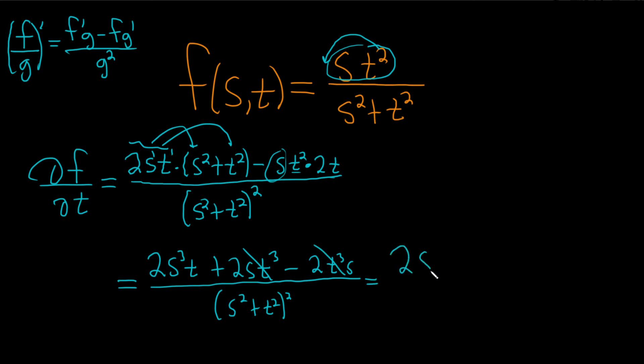So you get 2s cubed t over s squared plus t squared, and that is squared. And that would be the final answer. I hope this video has been helpful.